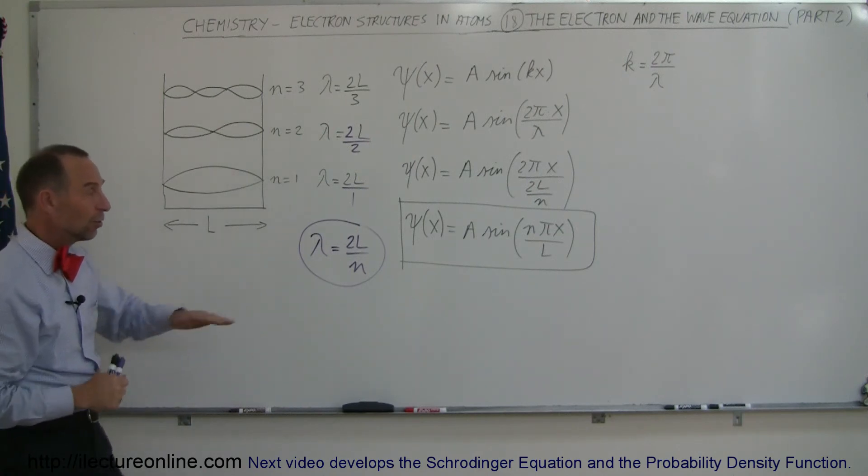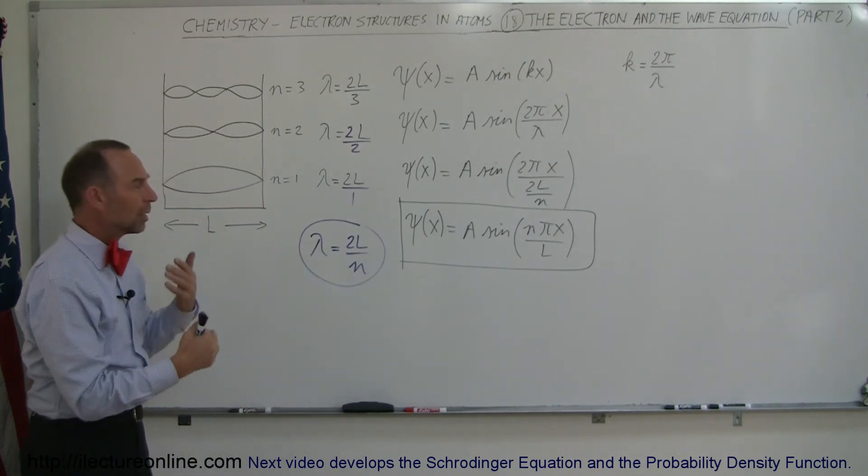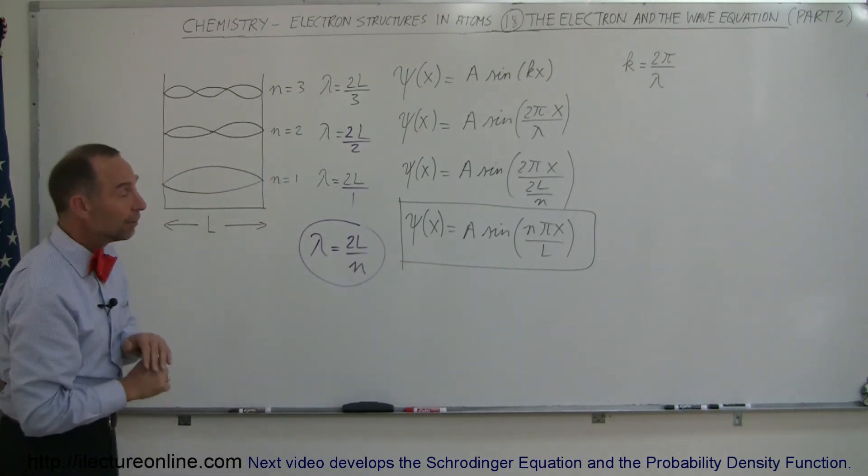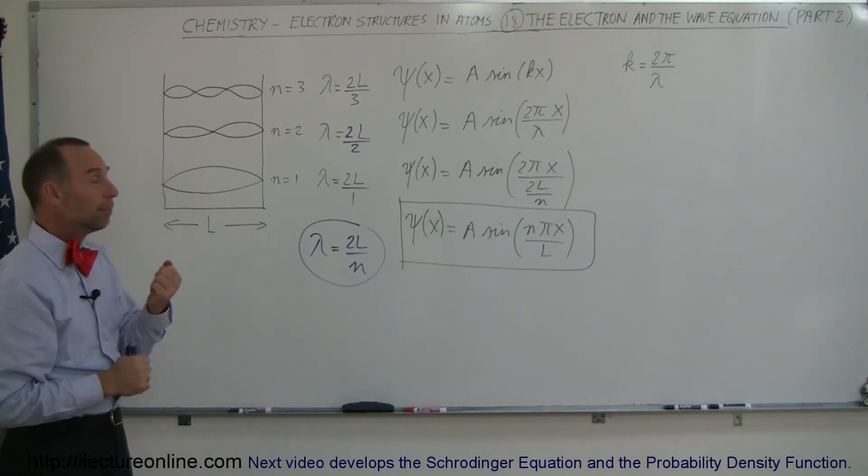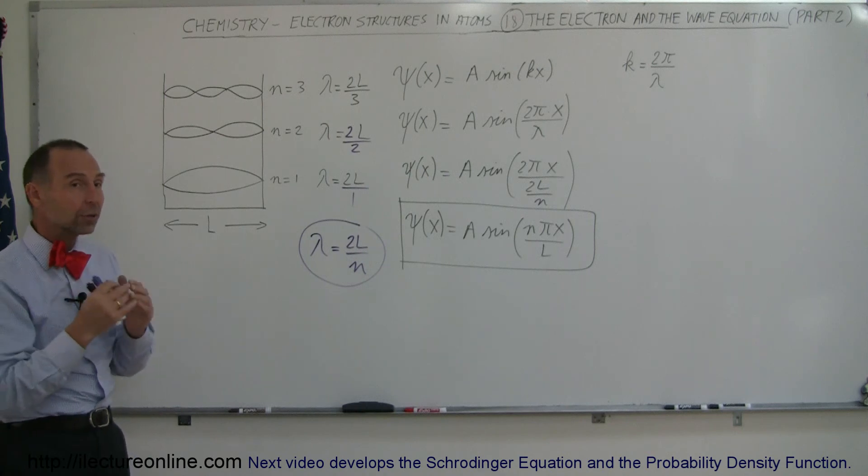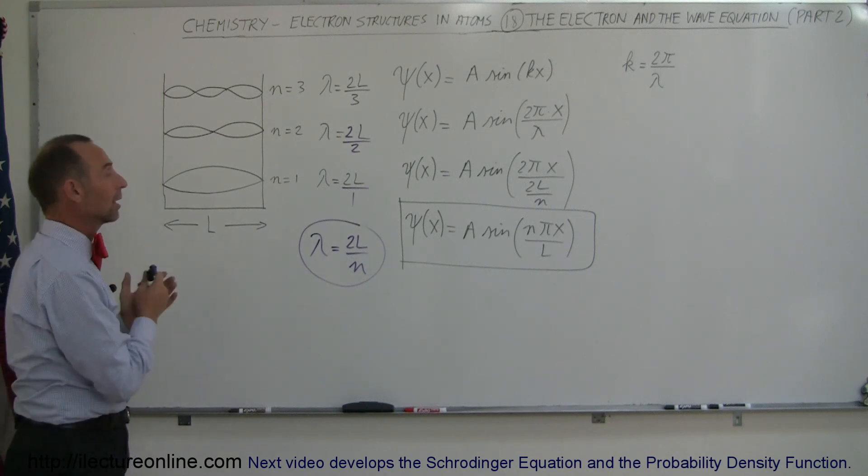Later on, once we determine what A is equal to and we come up with the probability function, which is defined by this equation right here, we can actually come up with a way to define what the probability will be where the electron can be.